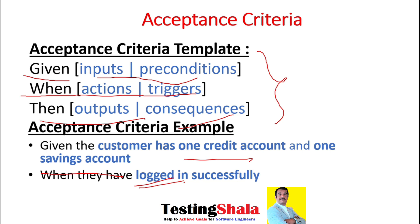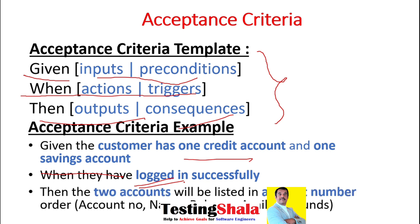'Then' the customer should be able to see both accounts with the account number, balance, and available funds as well. That is the acceptance criteria example. Now, using this example, how can we write user acceptance test cases?